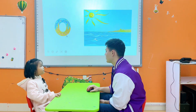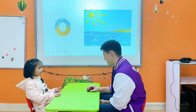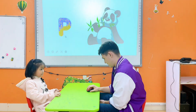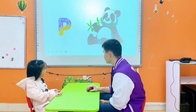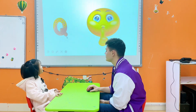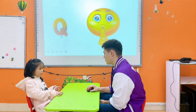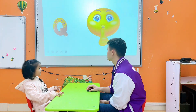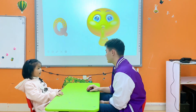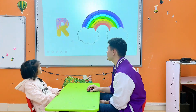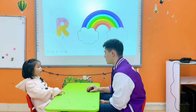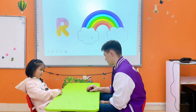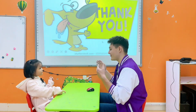O is for Austin. Yes. P. P is for panda. Mhmm. Q. Q is for? R is for? Rainbow. A rainbow. Yes. And we finished.